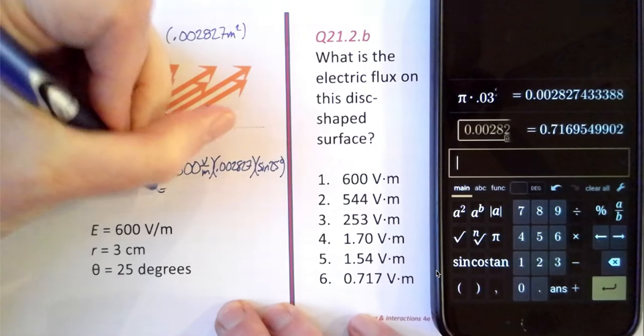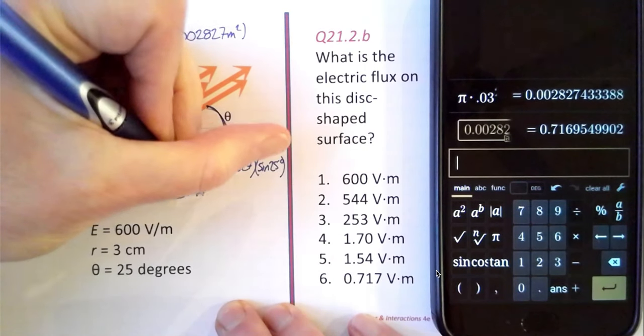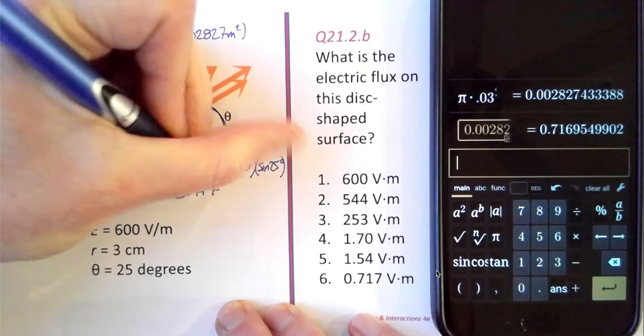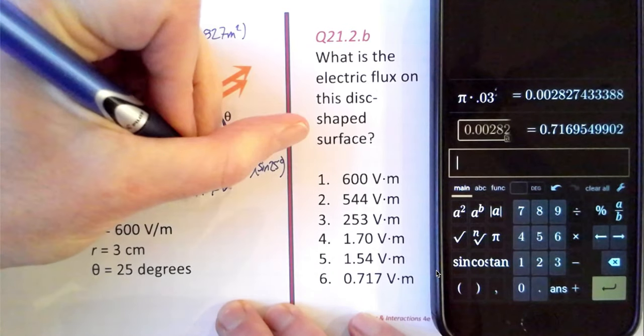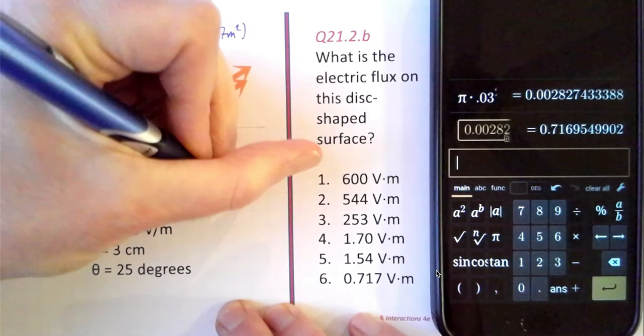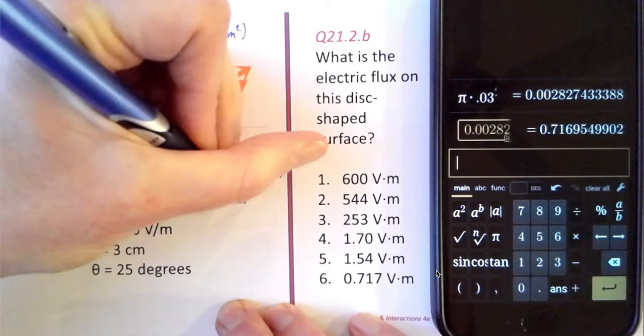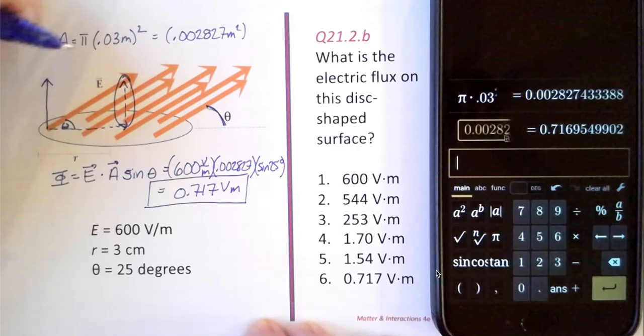That gives us 0.717 volt meters. And that looks like it is answer number six.